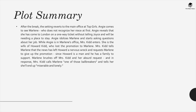After the break, the setting reverts to the main office at Top Girls. Angie comes to see Marlene, who does not recognize her niece at first. Angie reveals that she has come to London on a one-way ticket without telling Joyce and will be needing a place to stay. Angie idolizes Marlene and starts asking questions about her job. While Angie is in Marlene's office, Mrs. Kidd enters — she is the wife of Howard Kidd, who lost the promotion to Marlene. Mrs. Kidd tells Marlene that the news has left Howard a nervous wreck and requests Marlene to give up the promotion, since Howard is a man and has a family to support. Marlene brushes off Mrs. Kidd and her absurd request. In response, Mrs. Kidd calls Marlene one of those 'ball-breakers' and tells her she'll end up miserable and lonely.